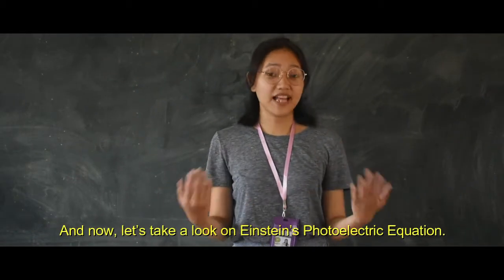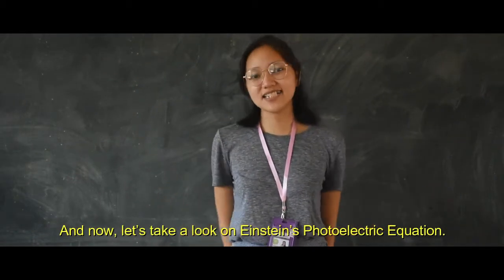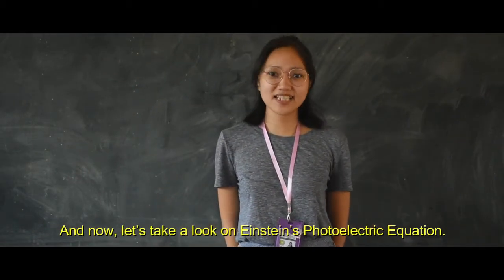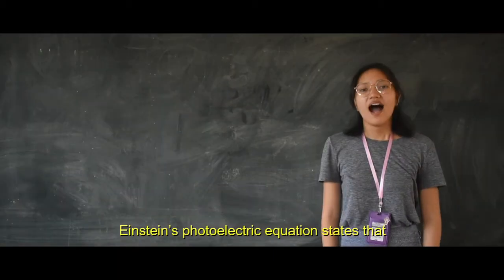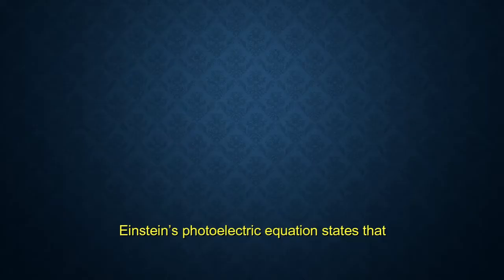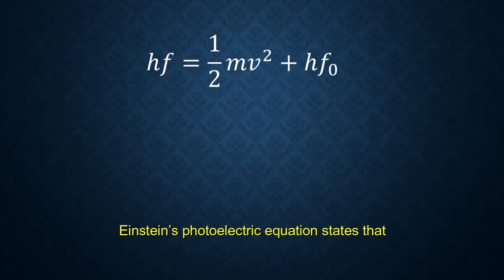Now let's take a look at Einstein's photoelectric equation. Einstein's photoelectric equation states that hf equals one-half mv squared plus hf₀.